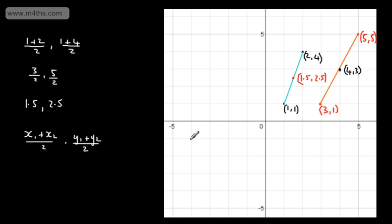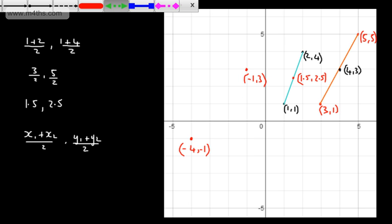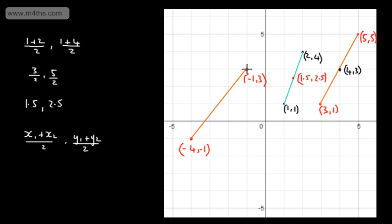Let's take a trickier example. We'll go for this point here and this point here, and find the midpoint of the line connecting these two. We've got an x-coordinate of minus 4 and a y-coordinate of minus 1 for the first point. The second point has an x-coordinate of minus 1 and a y-coordinate of 3. Adding the x-coordinates: minus 4 plus minus 1, divided by 2. For the y-coordinates: minus 1 plus 3, divided by 2.